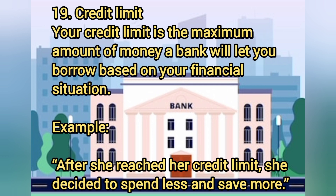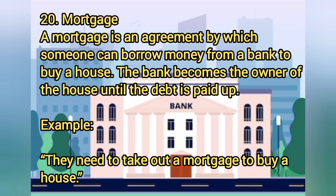Nineteen: credit limit. Your credit limit is the maximum amount of money a bank will let you borrow, based on your financial situation. Example: after she reached her credit limit, she decided to spend less and save more.